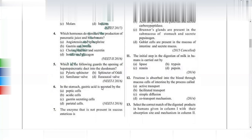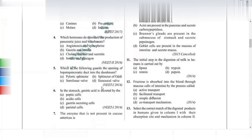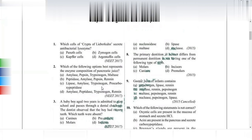The question asks which enzyme is not present in succus entericus, which means intestinal juice. The answer is nucleases. Nucleosidases will be present in intestinal juice, but nucleases will not.